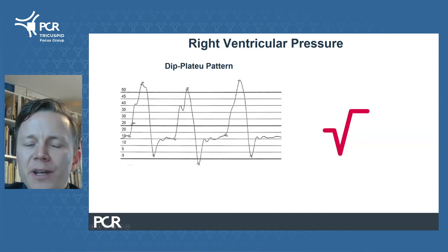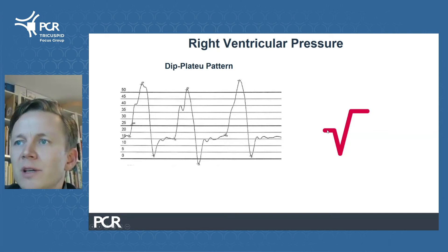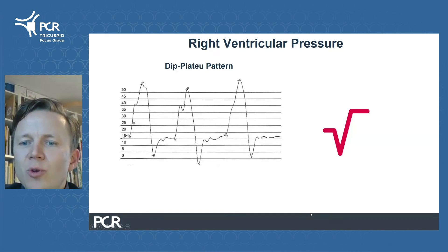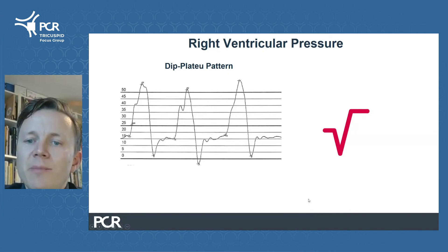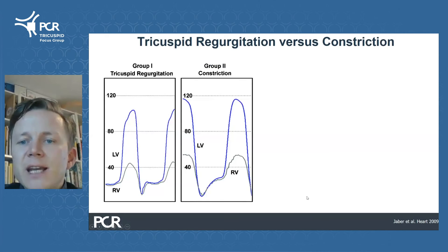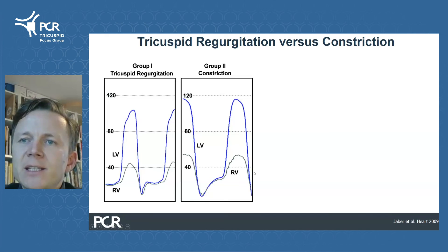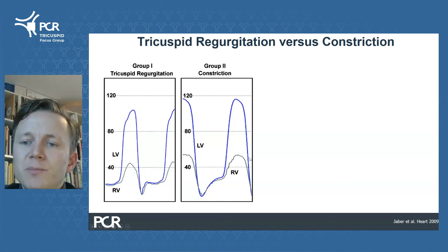Advancing your catheter to the RV, you may encounter a tracing often referred to as the dip-plateau pattern or square root sign. This is suggestive of a differential diagnosis of pericardial constriction or restrictive cardiomyopathy. For the distinction between constriction and restriction, we turn to ventricular interdependence, as evidenced by discordance in systolic RV and LV pressure tracings with respiration.